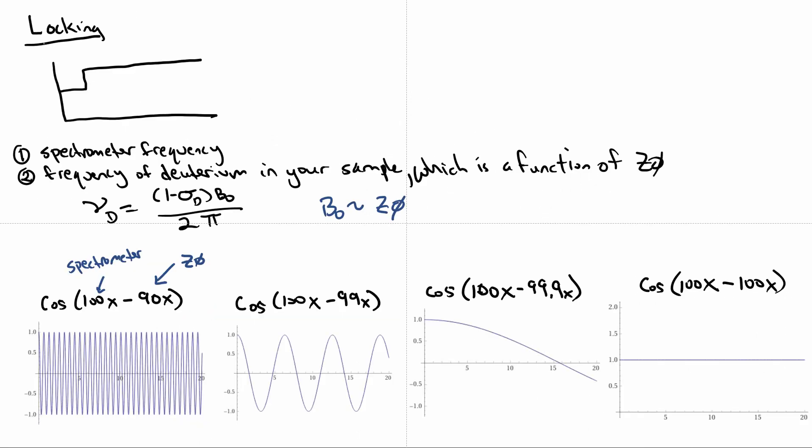The other thing in locking, as we've just described in the videos, is ultimately we want to get to this plateau situation. And so I want to kind of describe where this is coming from. So we have two frequencies, the spectrometer frequency at the locked channel. And so it's at some certain frequency, say 76 megahertz, or it depends on the magnet. And then we have the frequency of the deuterium in your sample, which is a function of Z0.